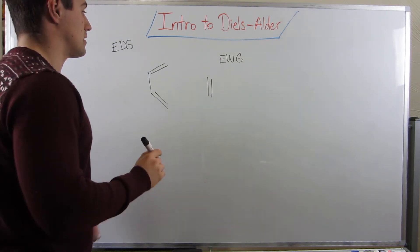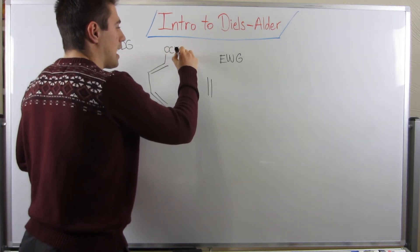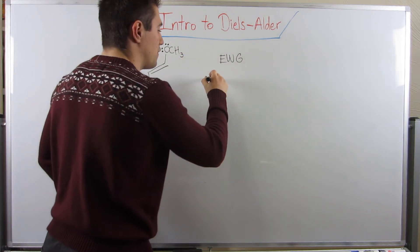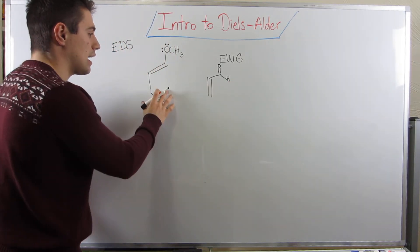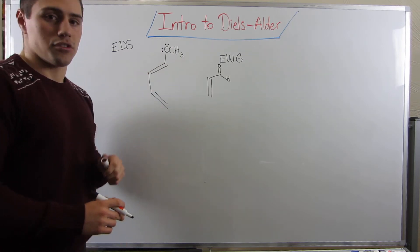Let me just give you an example. It's always easier than an example, right? So if I put a methoxy group on this diene, right, an OCH3, and let's just say for fun I put an aldehyde on the dienophile, right? Diene, dienophile, we got a methoxy group and an electron withdrawing group.